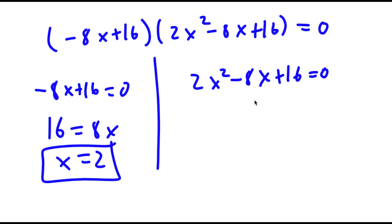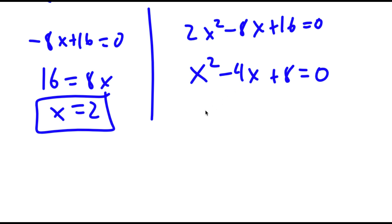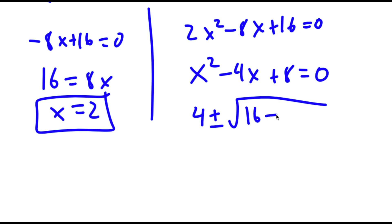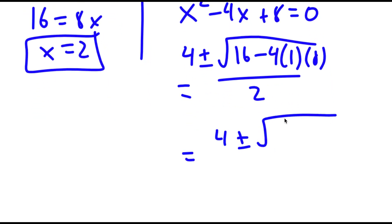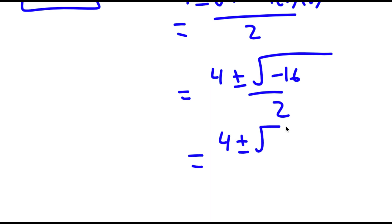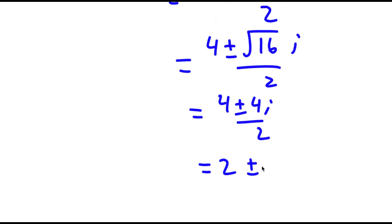And for 2x squared minus 8x plus 16, if I factor out 2, I get x squared minus 4x plus 8 is equal to 0. Now to solve this, I'm going to use the quadratic formula, which is negative b — so negative of negative 4, which is positive 4 — plus or minus the square root of b squared, so negative 4 squared which is 16, minus 4 times a which is 1, times c which is 8, all over 2a, so 2. This equals 4 plus or minus the square root of 16 minus 32, which is negative 16, over 2. That's equal to 4 plus or minus the square root of 16 times i, over 2, which is 4 plus or minus 4i over 2, which equals 2 plus or minus 2i.